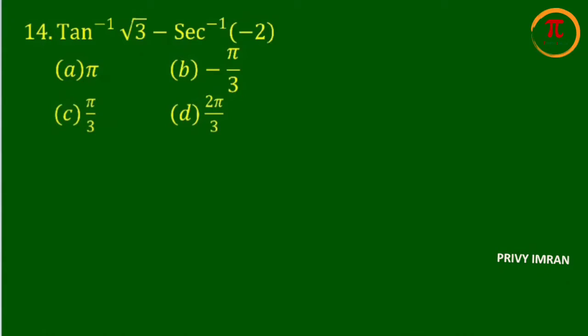Now we are going to discuss exercise number 2.1, question number 14. Here tan inverse of root 3 minus secant inverse of minus 2. The question has been given and again here there are four options available: option a pi, option b minus pi by 3, option c pi by 3, option d 2 pi by 3.